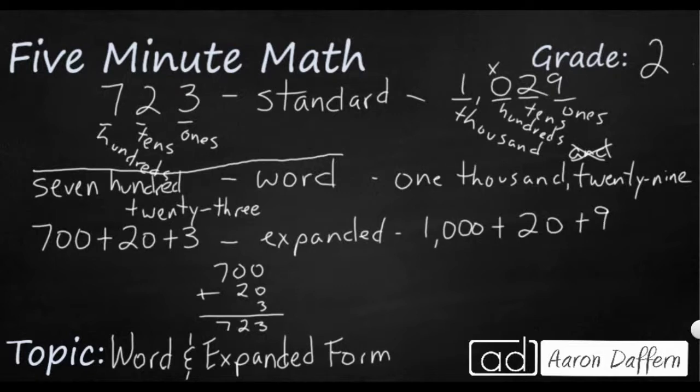So if I can write 1000 plus 20 plus 9, let's see what it looks like. If I add it all up, that is going to get me my expanded form for my number that I started with: 1029.